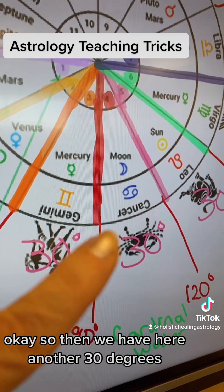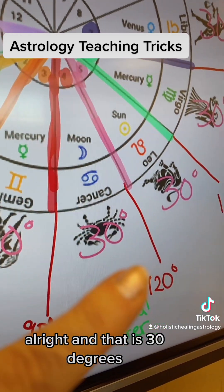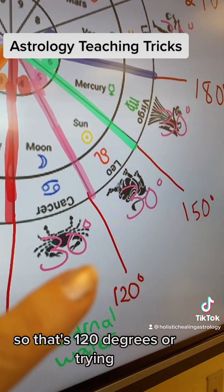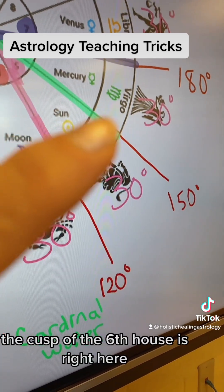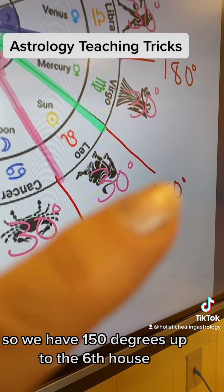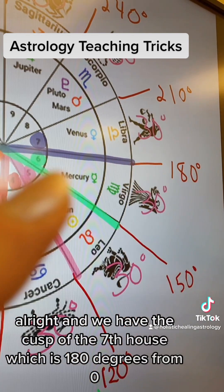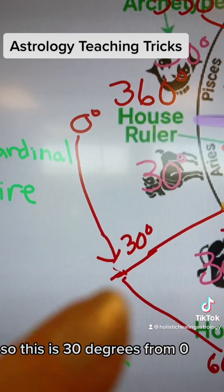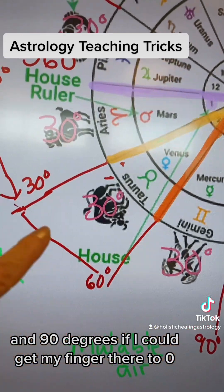Then we have another 30 degrees. The cusp of the fourth house is right here, and the pink line is the fifth house — it's easy to get mixed up. So that's 120 degrees, or a trine. Then we have another 30 degrees for the fifth house. The cusp of the sixth house is right here, another 30 degrees, so we have 150 degrees up to the sixth house. When we get to the seventh house, that's another 30 degrees — it's 180 degrees. The cusp of the seventh house is 180 degrees from zero. So 30 degrees from zero, 60 degrees from zero, and 90 degrees from zero.